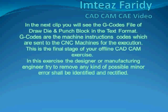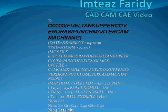In the next clip you will see the G-code file of the draw dies and punch block in text format. G-codes are the machine instruction codes which are sent to the CNC machine for execution. This is the final stage of the offline CAD/CAM exercise, where the designer or manufacturing engineer tries to remove any kind of possible minor error, which shall be identified and rectified.